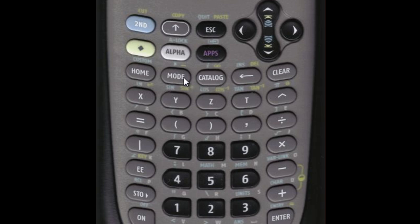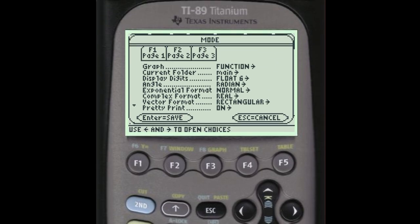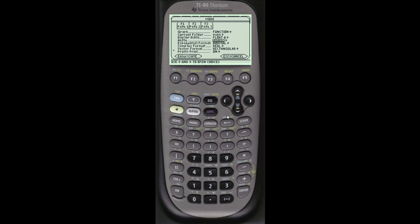Mode is where you're going to access a lot of the options that you have for your calculator: how you want to graph, how you want to handle digits, and whether or not you want exact or approximate values when you calculate things, and so on.